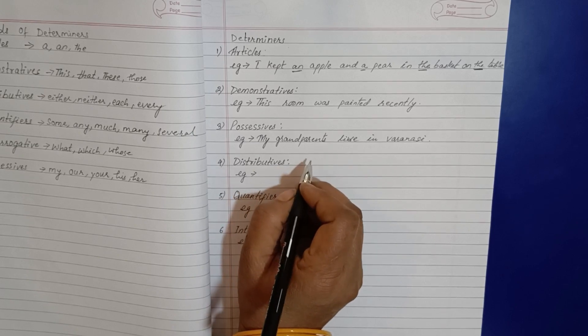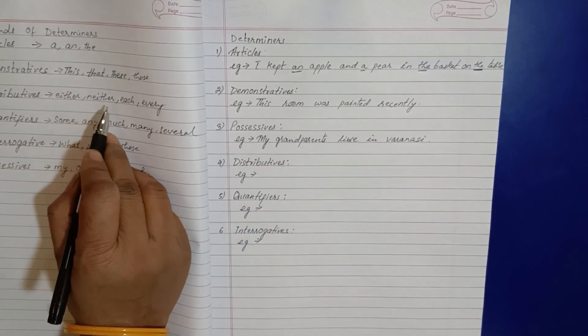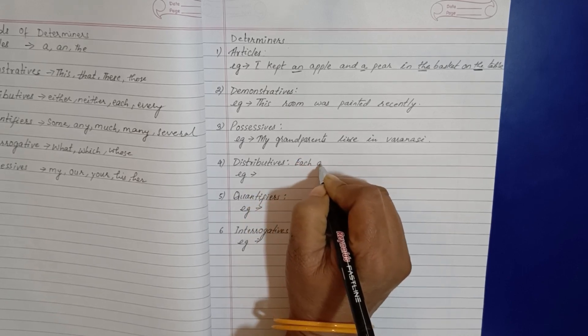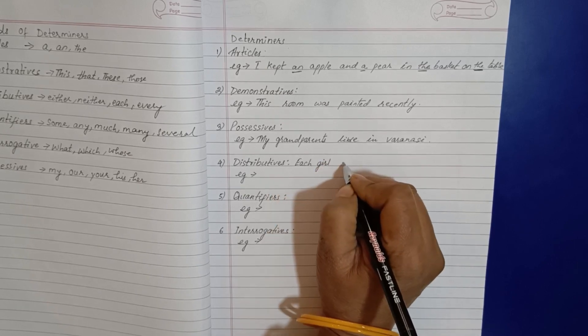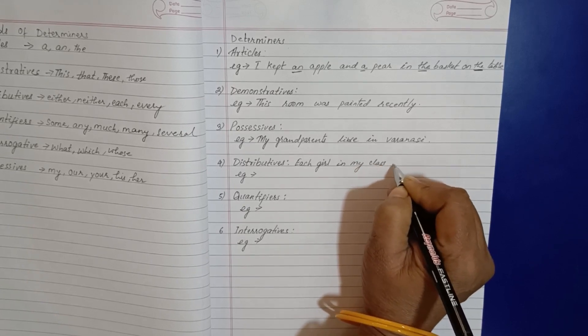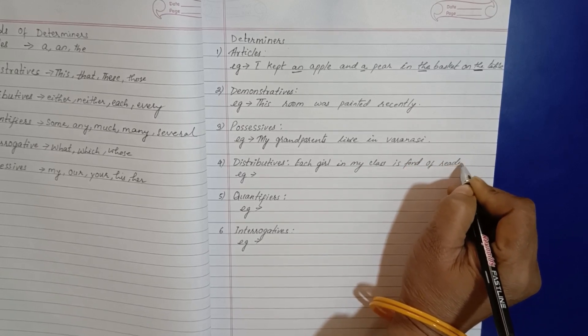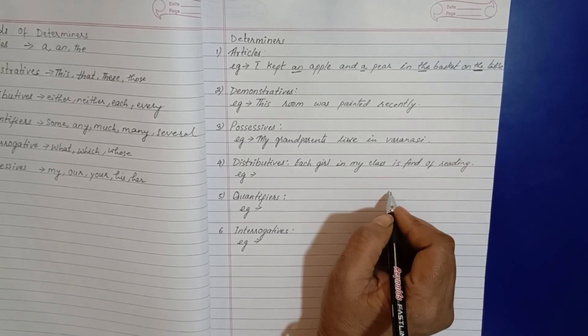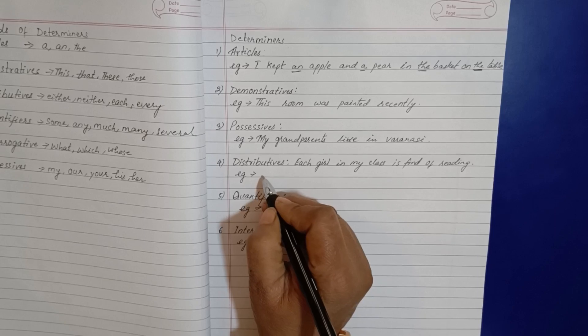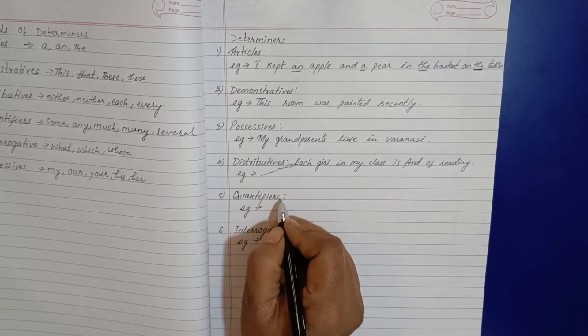Now distributives, how will we do this? We explained either, neither, each, every. So I am giving one example - each girl in my class is fond of reading. All the girls in my class like reading.